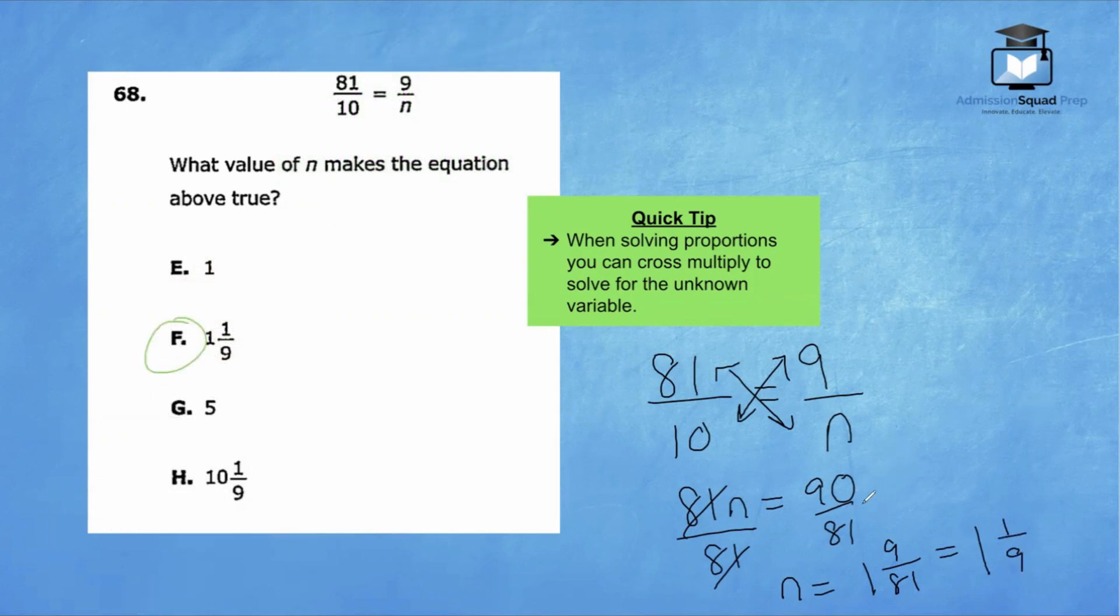Remember, to convert an improper fraction into a mixed number, we identify how many times the denominator can go into 90, which is one time, and then we're looking for that remainder, which is 9. So that's how we got 1 and 9 over 81.